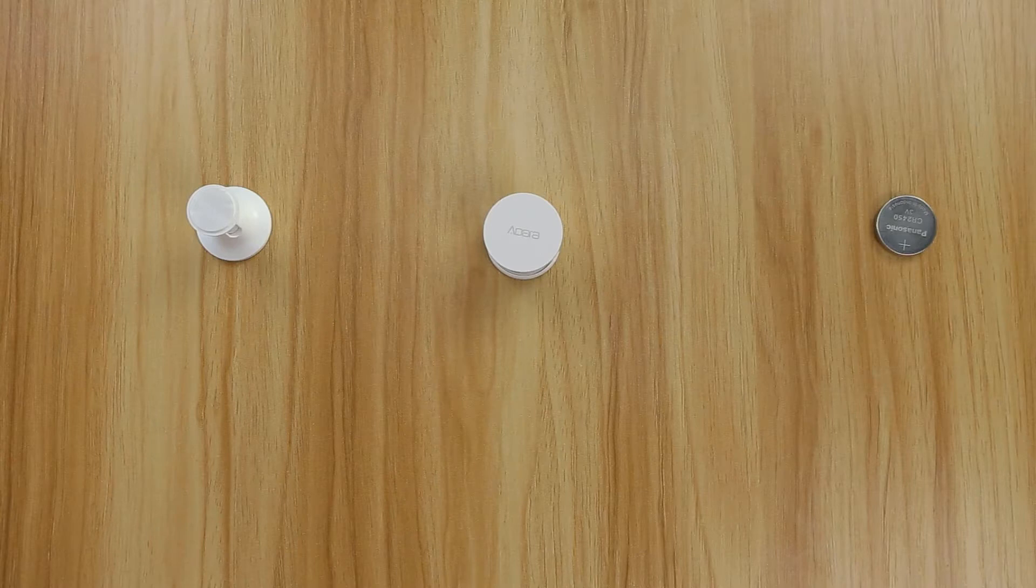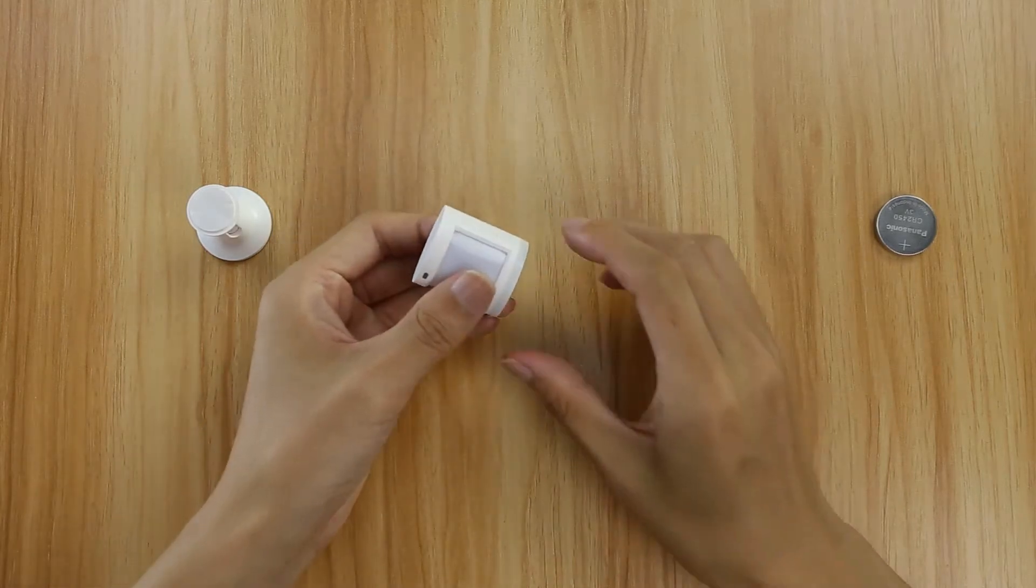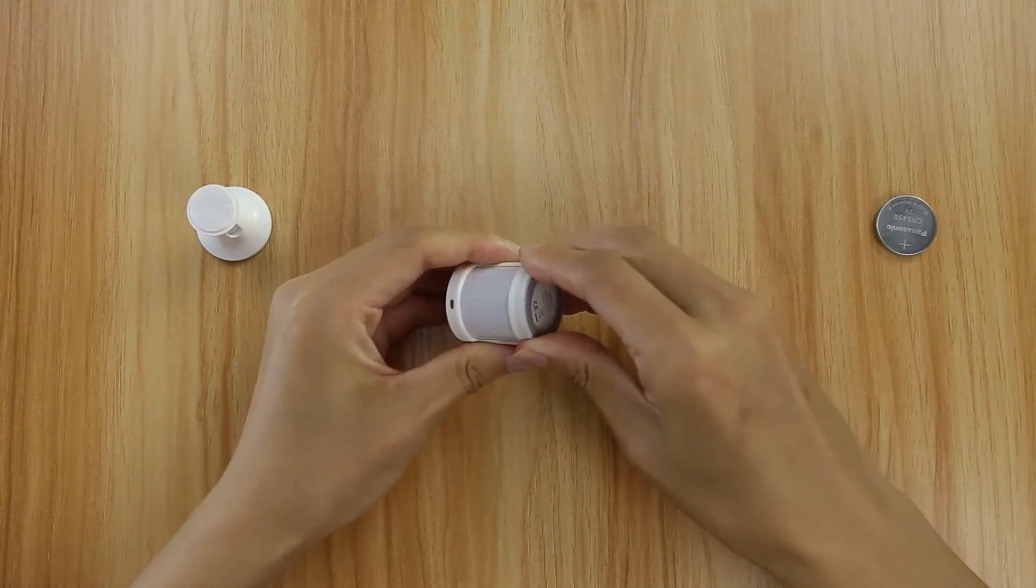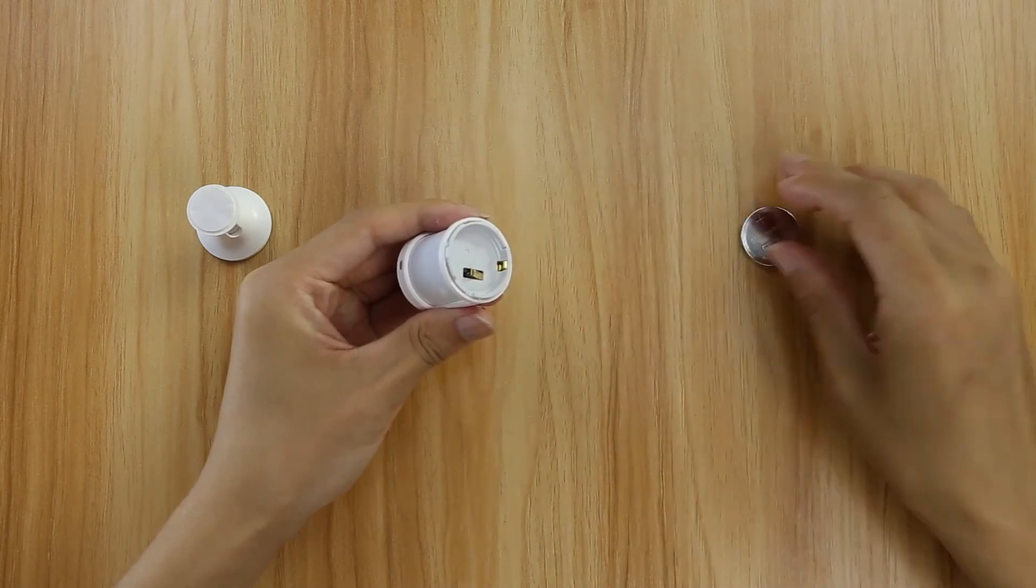Prepare a new CR2450 battery. Hold the upper cover of the sensor and the battery cover with both hands and turn the battery cover counterclockwise to open. Remove the existing battery by hand.